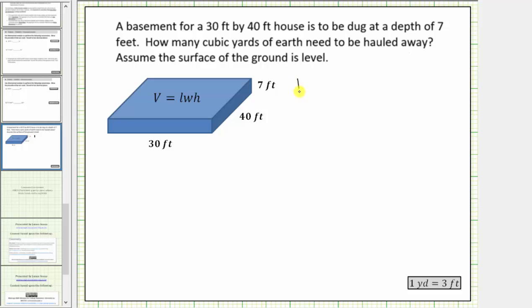So the volume in cubic feet is equal to 30 feet times 40 feet times 7 feet. The volume is equal to 8,400 cubic feet.